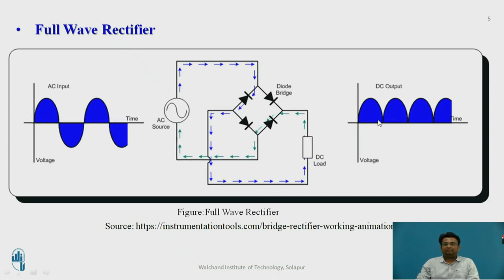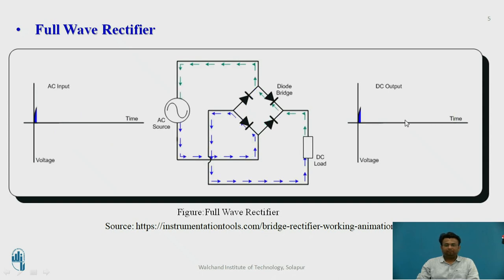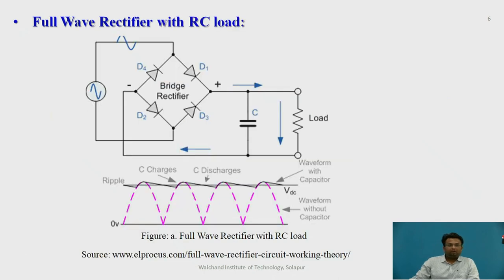You can see that the output consists of ripples. In order to remove these ripples, you can use a capacitor. This is the full wave rectifier with the RC load. Due to the addition of the capacitor in the circuit, the resulting output waveform has less ripple. This is the previous waveform with ripple, which is without capacitor, and this is the new waveform with no ripple or less ripple compared to the previous output. This happens because of the charging and discharging of the capacitor.